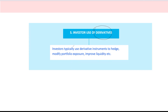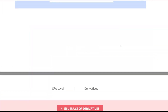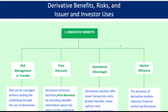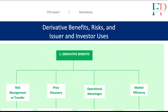With derivatives, you get a powerful mix of benefits and risks. For both issuers and investors, derivatives offer tools to manage risk, enhance market access, and drive efficiencies. But remember — with great power comes great responsibility. These tools are only as effective as the strategy and knowledge behind them. Derivatives are all about balance: managing risk and seizing opportunity, but always with an eye on the potential pitfalls.